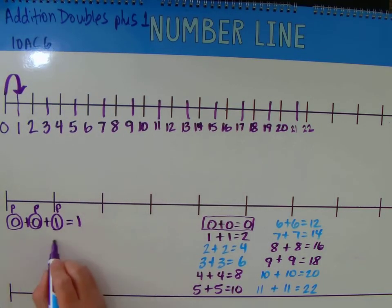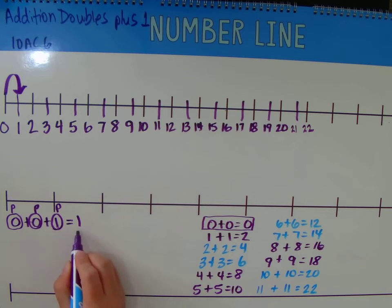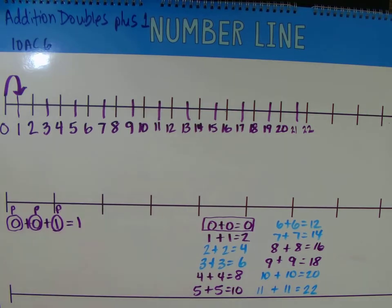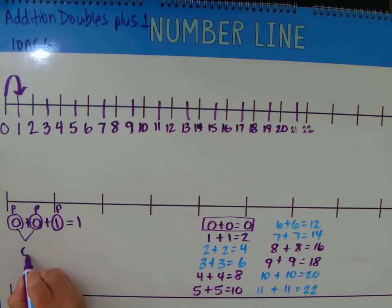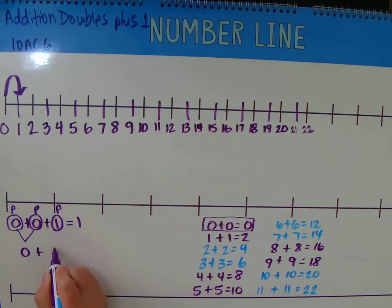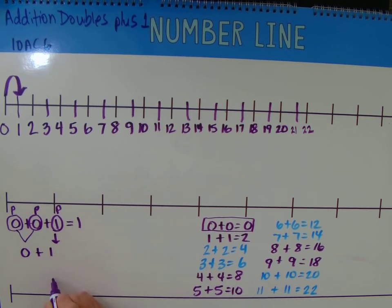0 plus 0 plus 1 equals 1. So we can add 0 plus 0 equals 0, 0 plus 1 more equals 1.